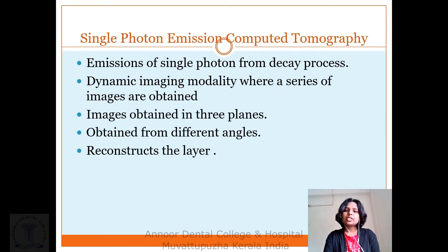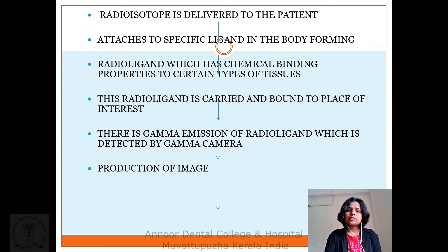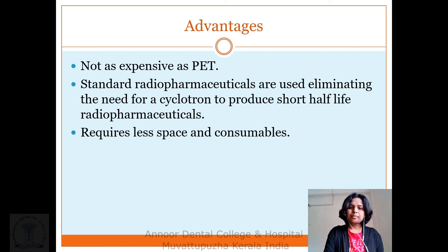SPECT — single photon emission computed tomography: it involves emission of single photons from the decay process. It is a dynamic imaging modality where a series of images are obtained in three planes from different angles, which are then reconstructed. The radioisotope is delivered to the patient and attaches to specific ligands in the body, forming a radioligand with chemical binding properties to certain types of tissue. This radioligand is carried and bound to the planes of interest, with gamma emission detected by a gamma camera to produce images. Advantage: not as expensive as PET, and standard radiopharmaceuticals are used, eliminating the need for a cyclotron.